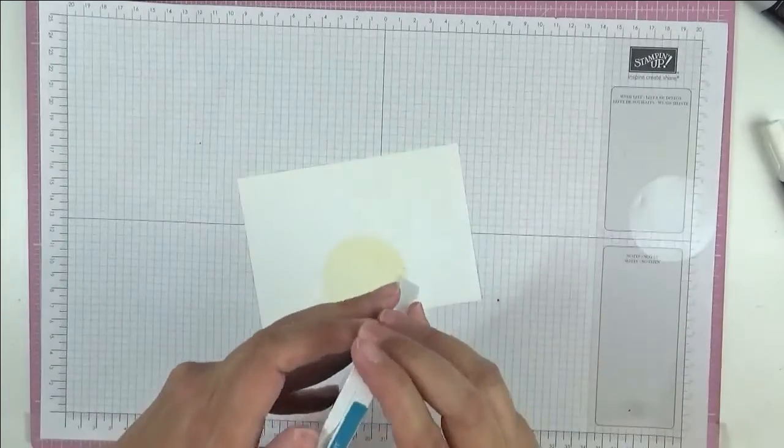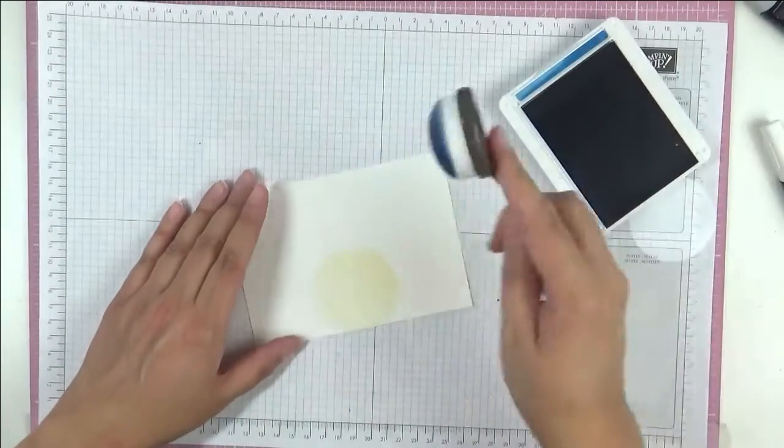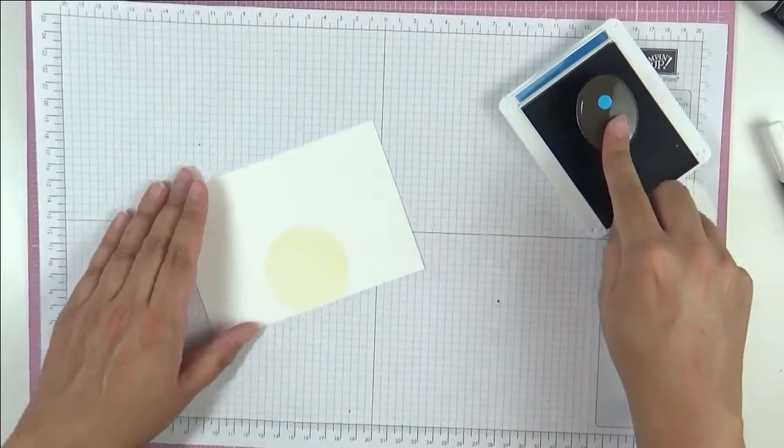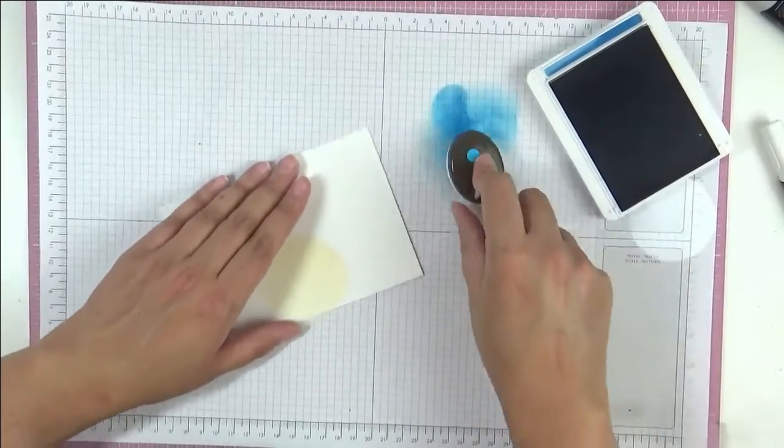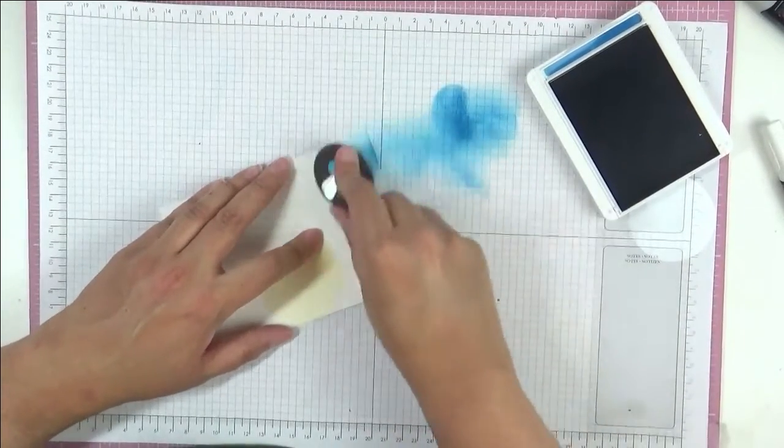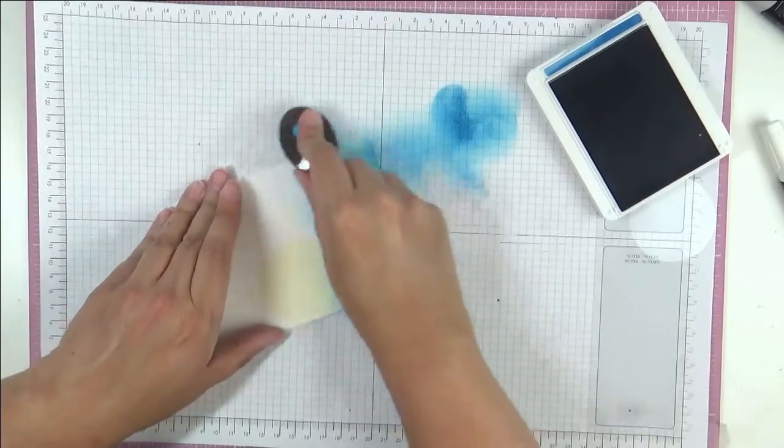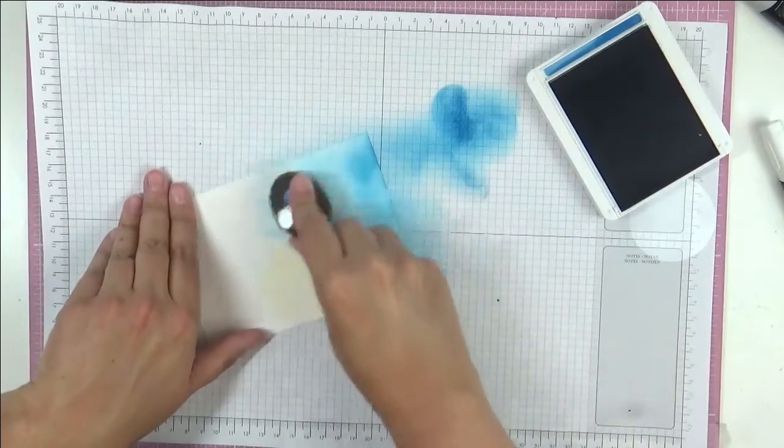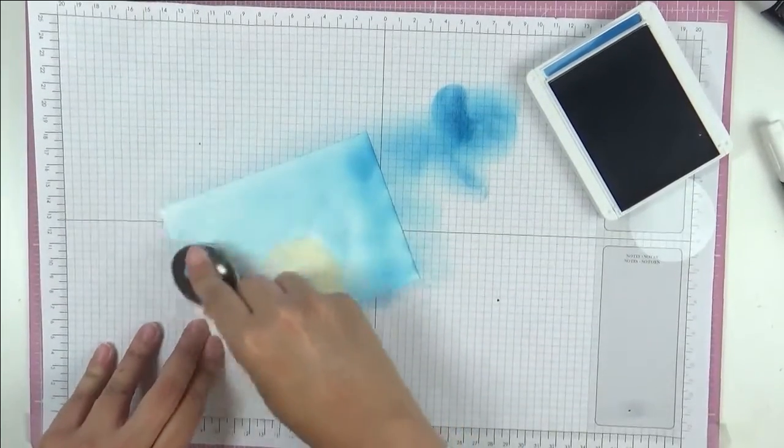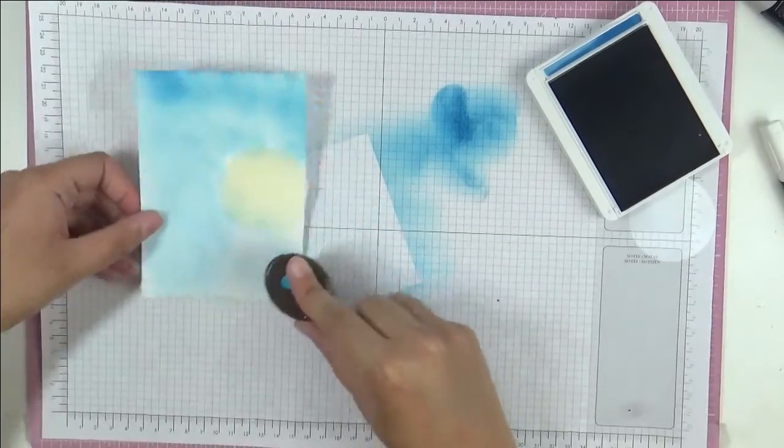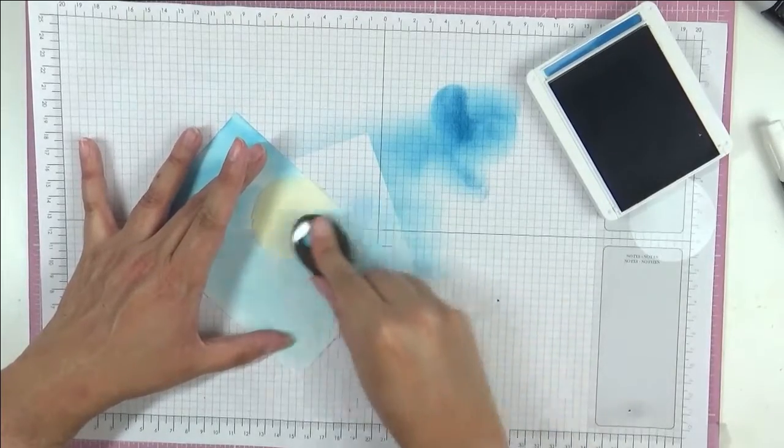I'm going to start off with Pacific Point. I'm going to be using my wonderful blending tools. Now my Pacific Point is quite juicy, so I'm going to take off a lot of the ink before I come onto the page. As you can see it's really juicy ink pad.